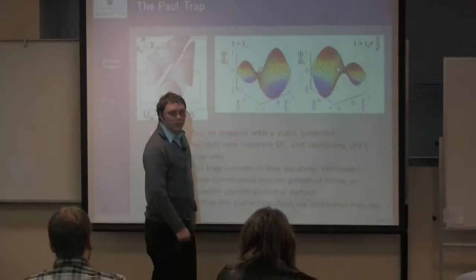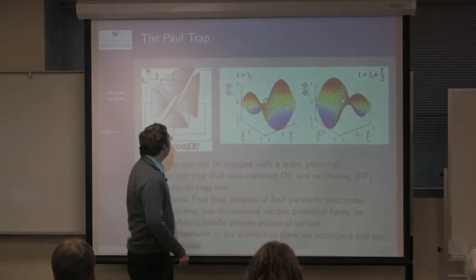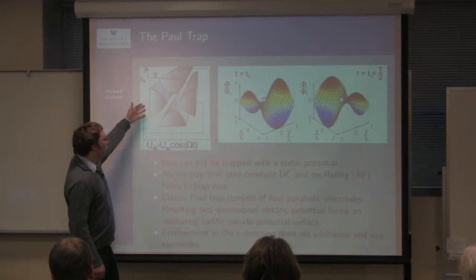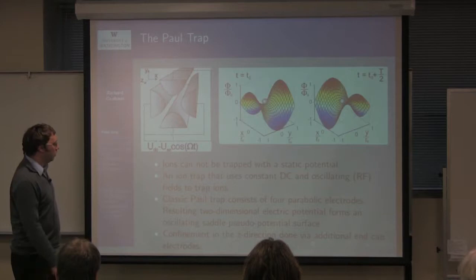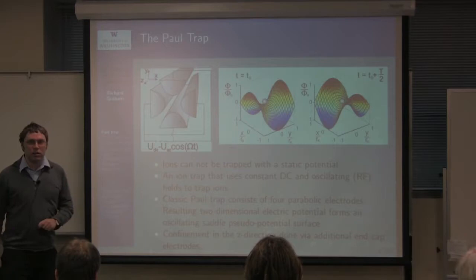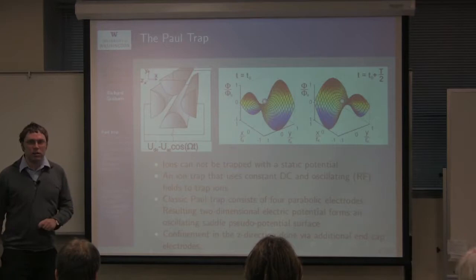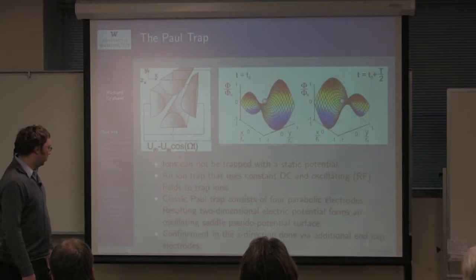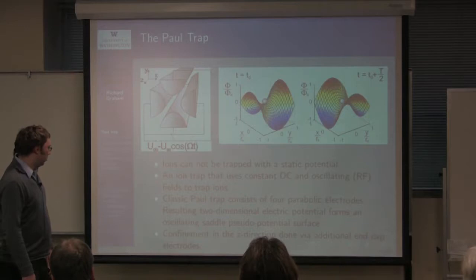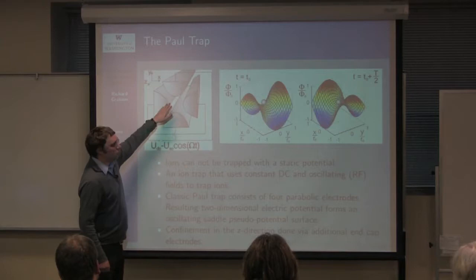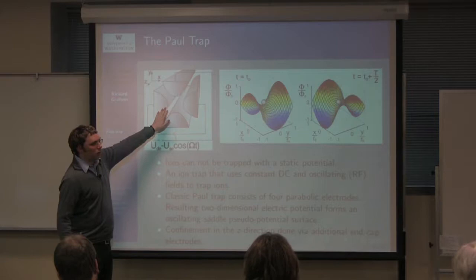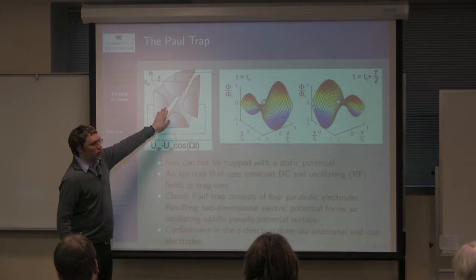The saddle rotates around in time at some number of megahertz — it's an RF, radio frequency potential. This is the simplest example of how it's arranged; in practice there are much more complicated ways. Laser cooling is one of the other things we need, but this basically sets up the potential in which we keep the ion or ions. In addition, we have to confine it in the horizontal direction using end-cap electrodes with a static potential applied.